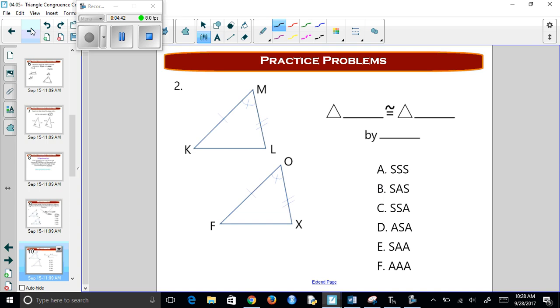Now if we look at this, we have this side, the angle in between, and this other side. So first, let's name them: KML is congruent to FOX. And notice that we're matching things up correctly. And now the angle is between the two sides. So we're going to say side, angle, side.